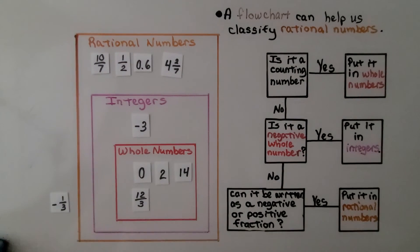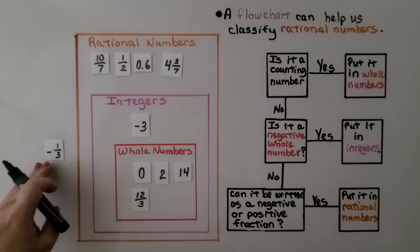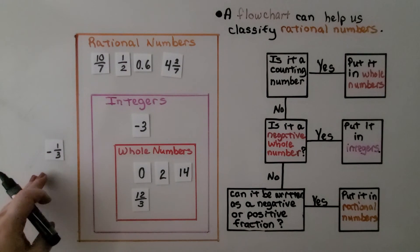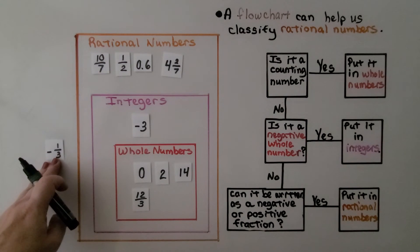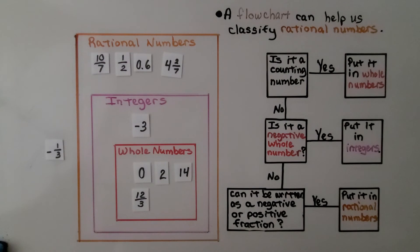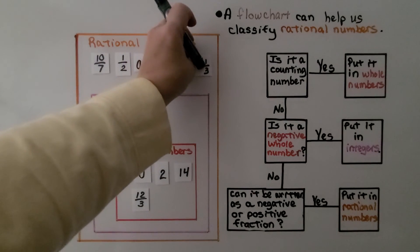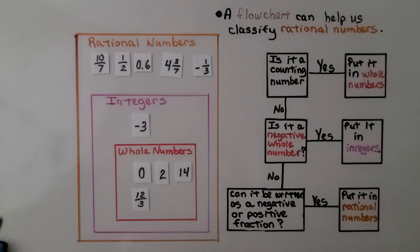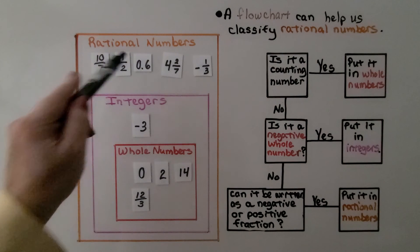Now we have negative one-third. Is it a counting number? No. Is it a negative whole number? It is negative, but it's not a whole number. Can it be written as a negative or positive fraction? Yes — so it is a rational number. Be very careful: you may need to simplify some fractions to see if they're really whole numbers. And remember, you can write a decimal as a fraction.